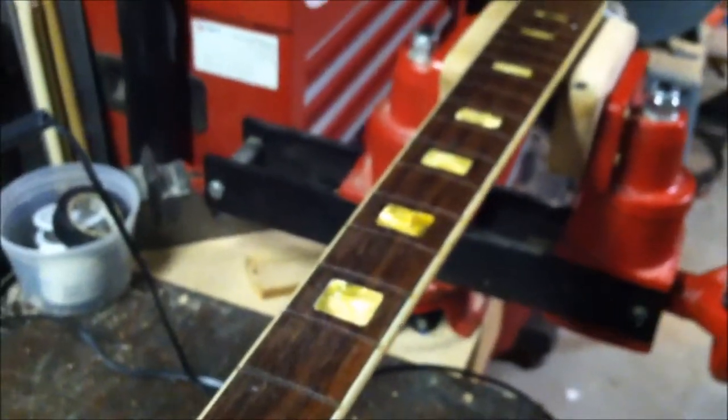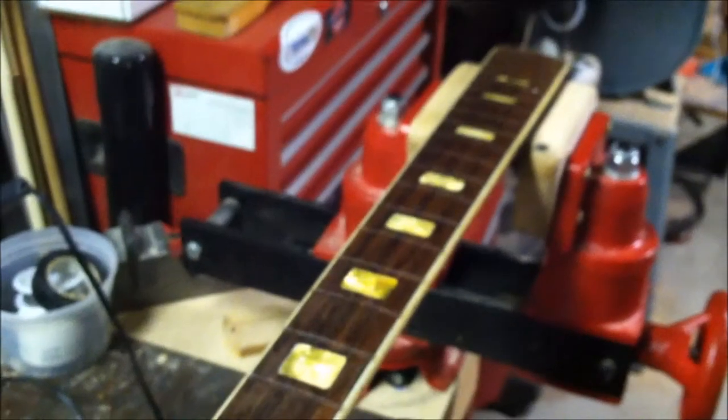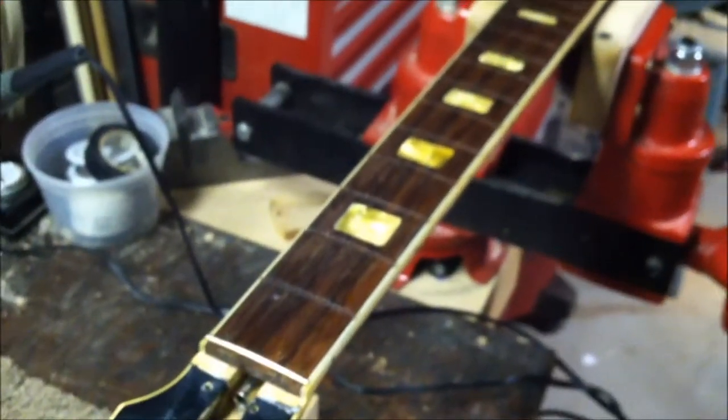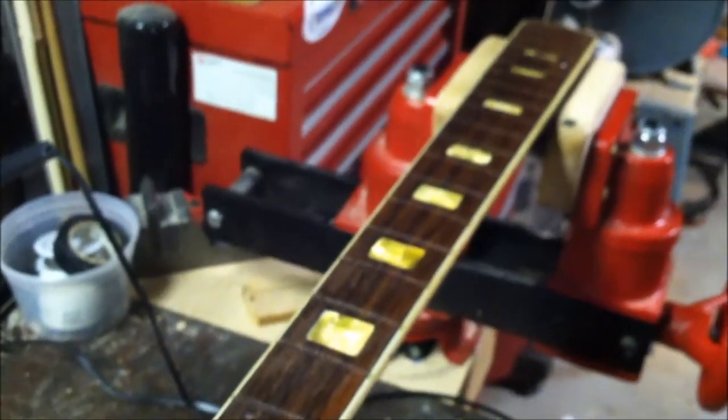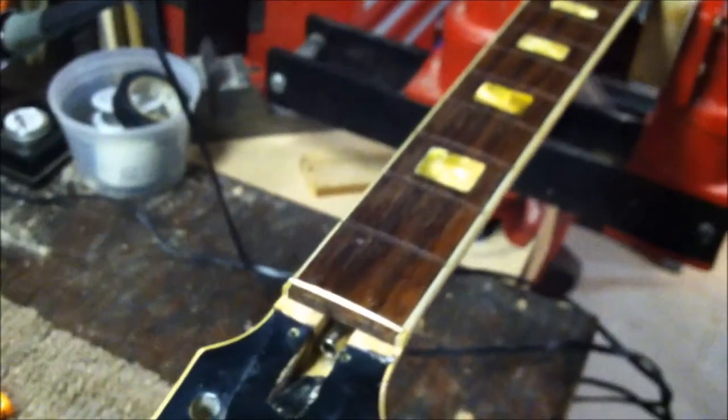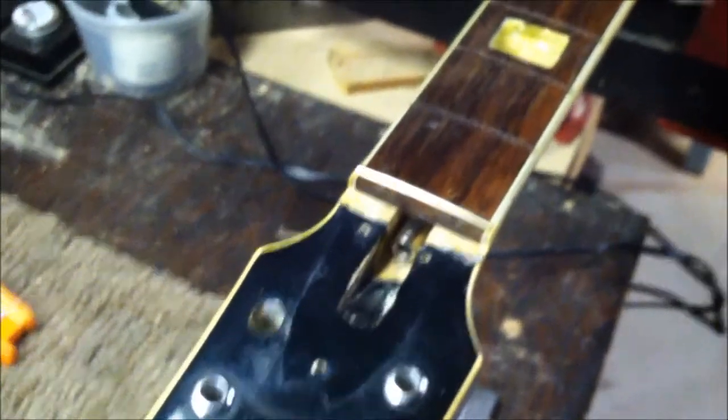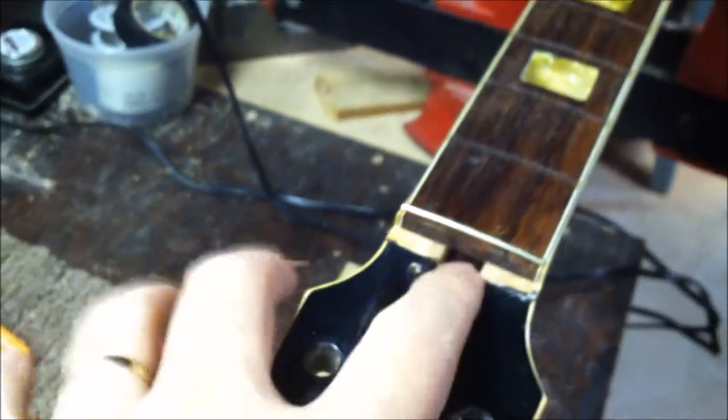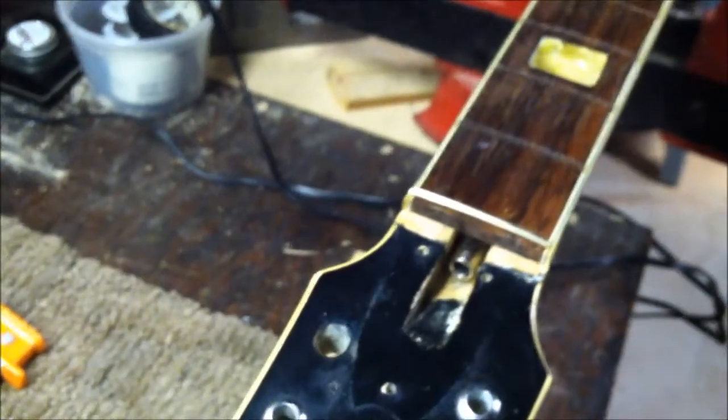It's a 12 string, so it's going to have a lot of pulling from the strings. The 12 string will have extra pull, so I wanted to make sure that fingerboard was on there flat. Then when the pull happens, you have enough room to adjust that truss rod.